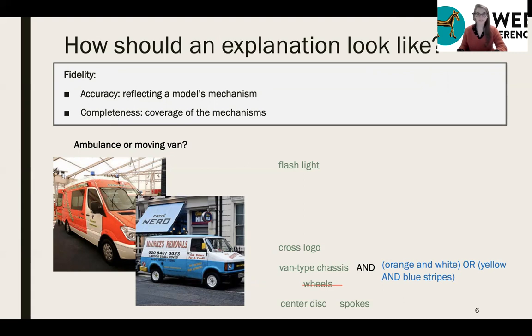Our second requirement is that the explanation should reflect the mechanisms of the model with high fidelity. If we look at classification tasks, such as classifying ambulances and moving vans, we do not want to know about any concept that a human might associate to each class. Instead, we want to know about the ones the model actually looks at. Here, for instance, the model might not have learned to look at the wheels, since they are present in both types of classes. So we wouldn't want wheels to appear in our explanation. Fidelity also means high coverage. Even when a concept is not expected by humans, let's say the model learned to look at the ambulance driver, we would want it to appear in the explanations.